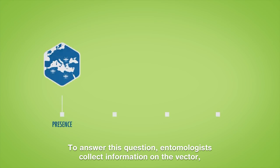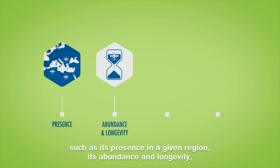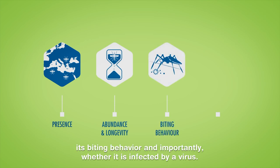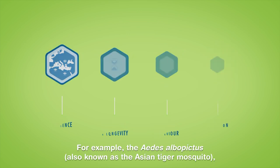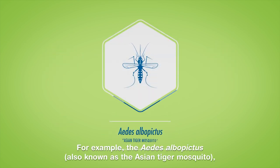They gather information such as the vector's presence in a given region, its abundance and longevity, its biting behavior, and importantly whether it is infected by a virus. For example, the Aedes albopictus, also known as the Asian tiger mosquito,